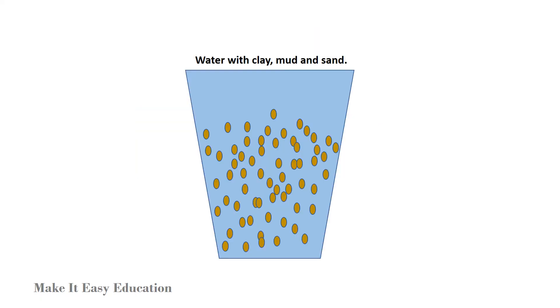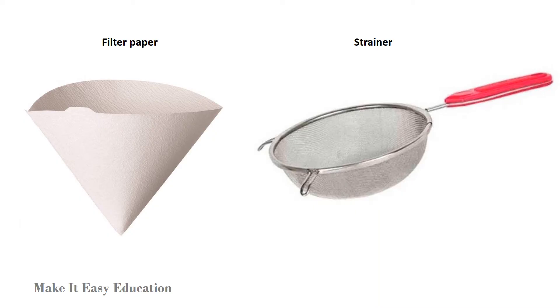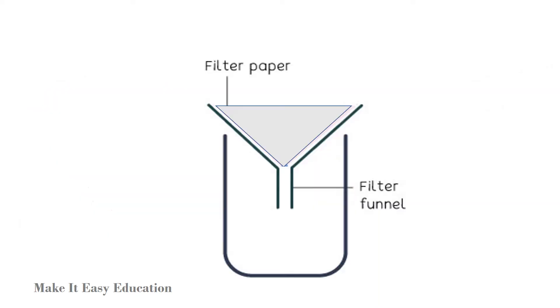Filtration. Filtration is used to separate insoluble solid impurities like clay, mud, and sand from water. Filtration can be performed by using filter paper or strainer. The filter paper is folded and placed on a funnel.